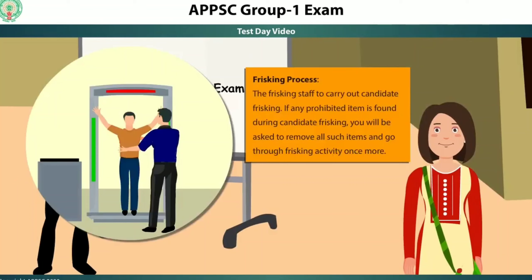Frisking Process: The Frisking Staff will carry out the candidate frisking. If any prohibited item is found during candidate frisking, you will be asked to remove all such items and go through the frisking activity once more.